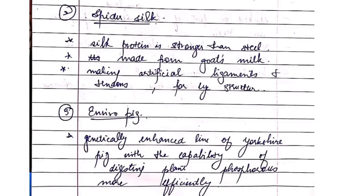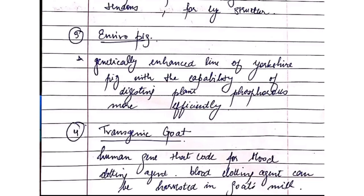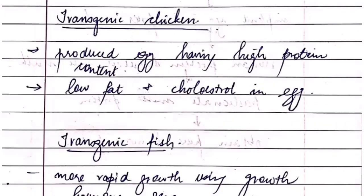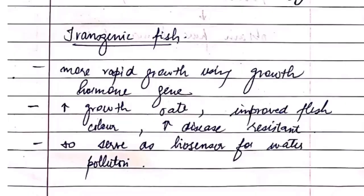Some examples of transgenic animals include GloFish, spider silk, and environmental pigeons — they have enhanced or inserted features which improve their breed and quality. Transgenic goat is another example in which the human gene coding for a blood clotting agent was introduced. Transgenic cow Rosie was the first transgenic cow to produce human protein. Transgenic fish showed more rapid growth using the growth hormone gene, improving flesh color and increasing disease resistance.